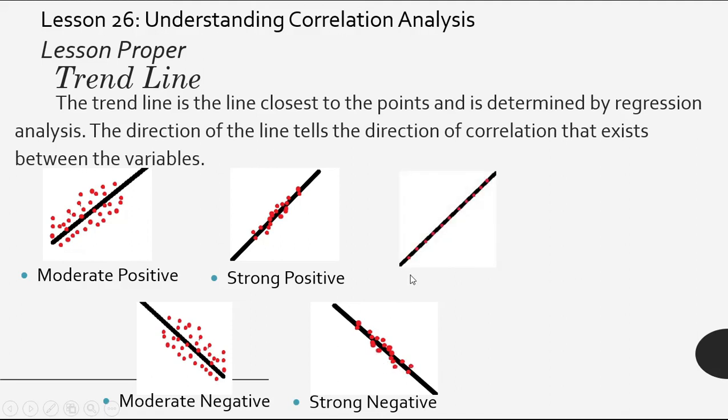How about this one? Sir, we can barely see the dots. The dots are aligned right on the line. So therefore, we can say that the strength of the correlation is what? Perfect. Then the direction is positive.